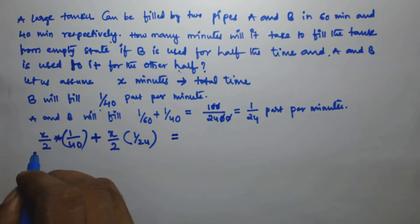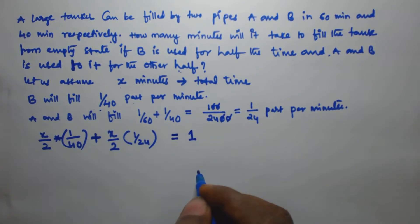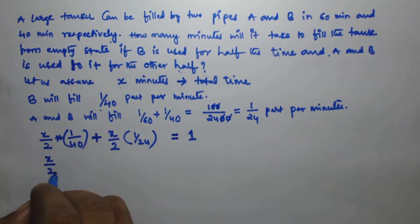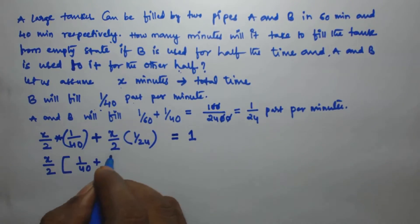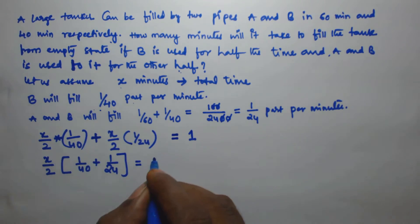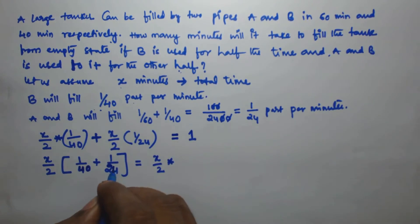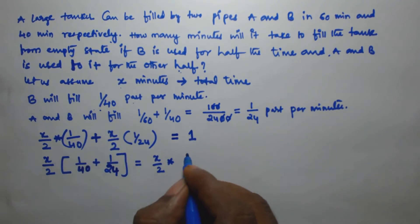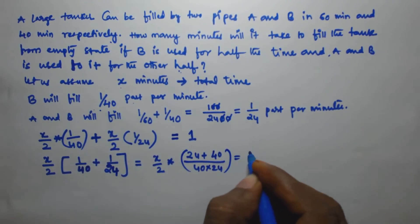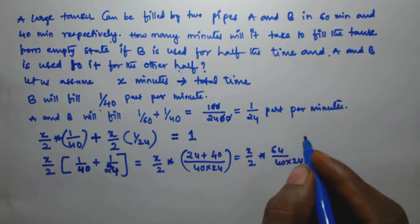Since B is used for x/2 minutes and A and B together are used for the remaining x/2 minutes, and the tank is completely filled, we set up the equation: (x/2)(1/40) + (x/2)(1/24) = 1. Taking x/2 common: x/2 × (1/40 + 1/24) = 1, which gives x/2 × (24 + 40)/(40 × 24) = x/2 × 64/960.